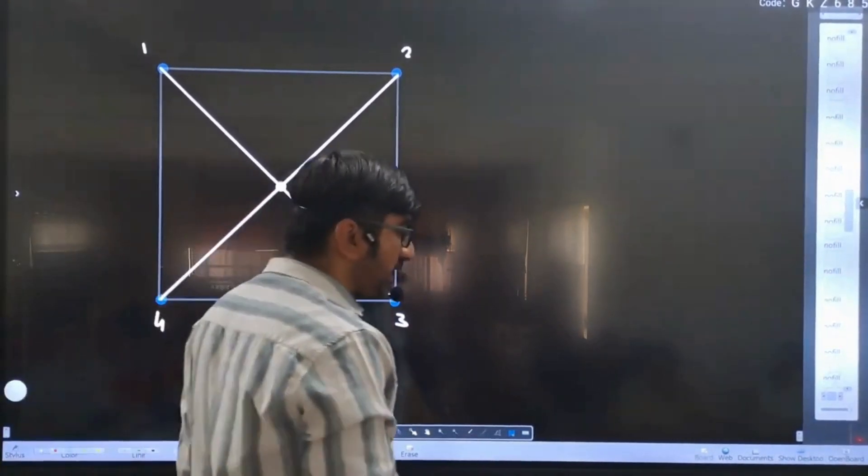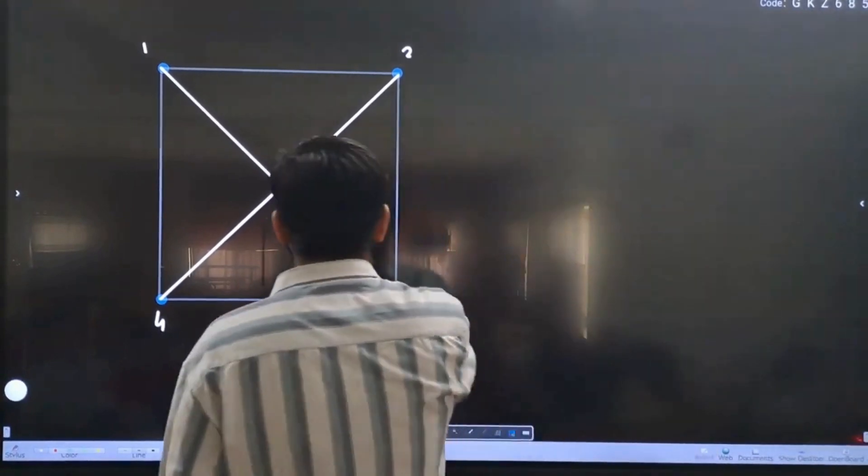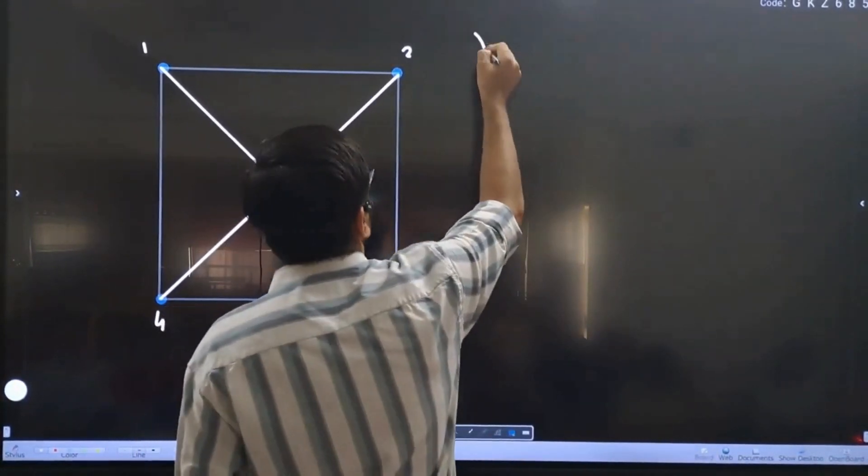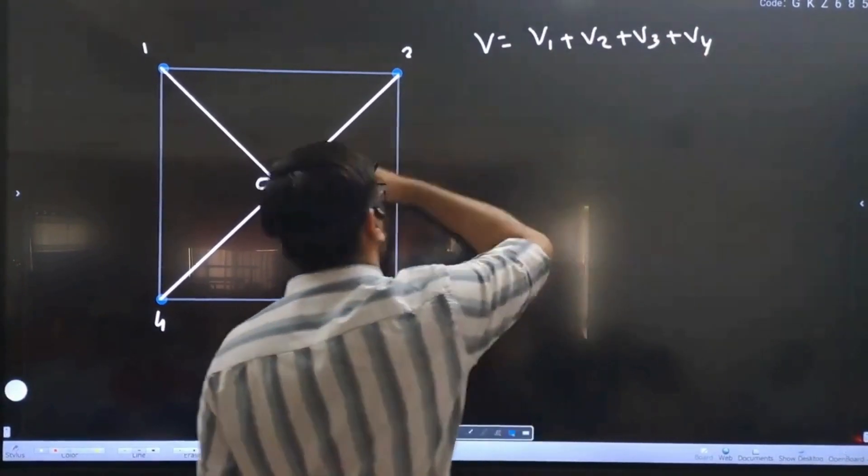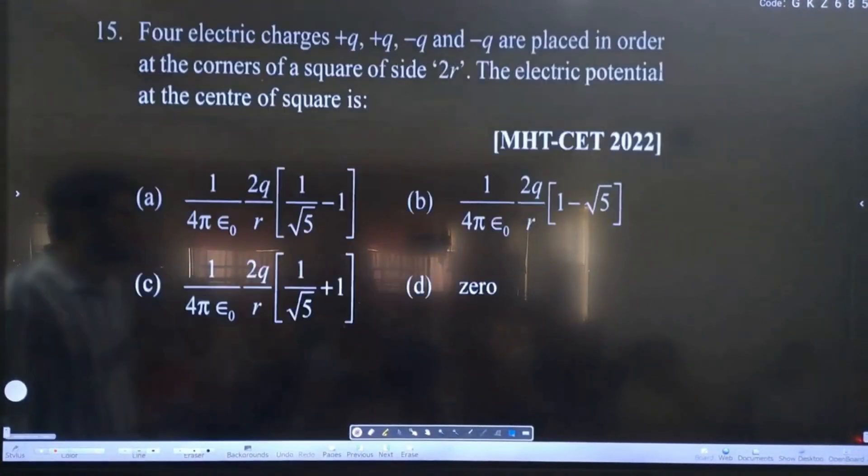The potential at the center, the potential at this point. So the total potential at the center of the square - the potential is due to 1 + 2 + 3 + 4. Four charges' potential. It is easy.